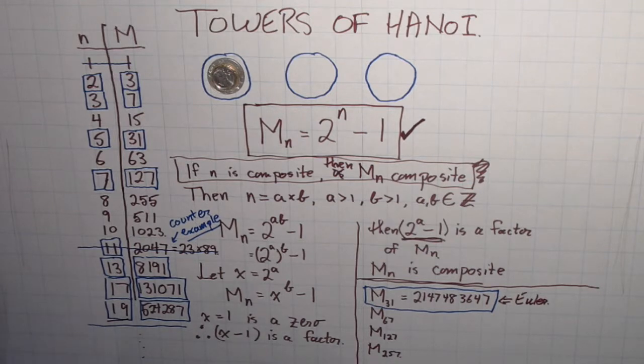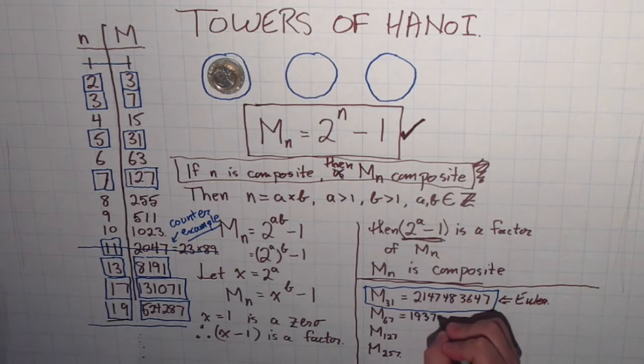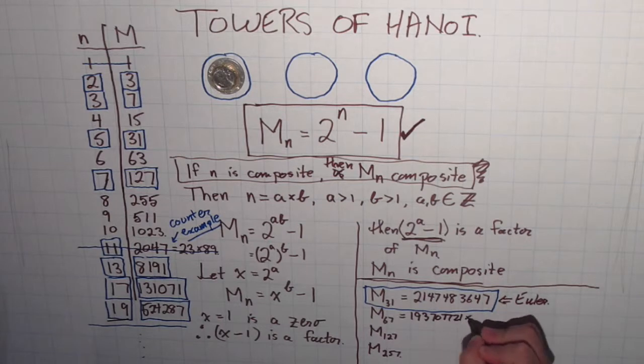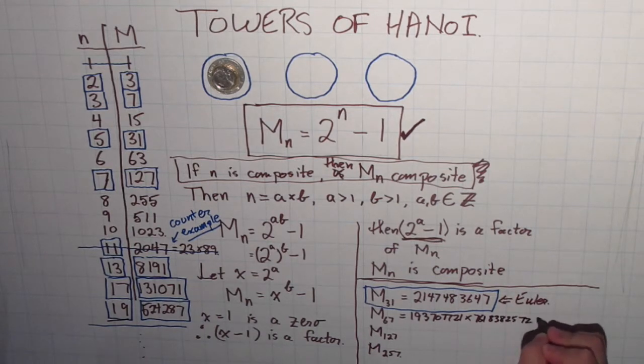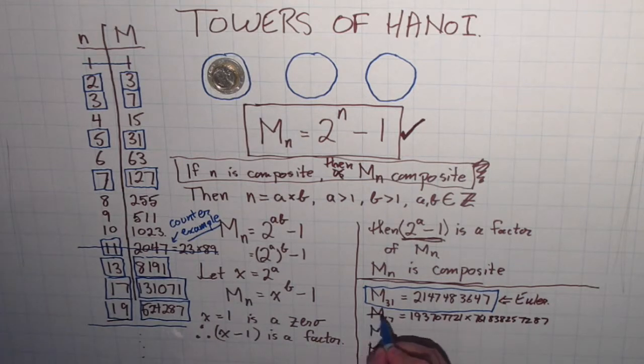This one turns out not to be prime, M_67. So Mersenne was wrong on that one. This one, and this is the last one where I'll write out all the numbers, turns out to be 93,707,721 times 761,838,257,287. If you can imagine figuring that out by hand, wow, that is an impressive feat. So that one turns out not to be prime. So it seems like now that throws doubt on these other two, doesn't it? Okay.